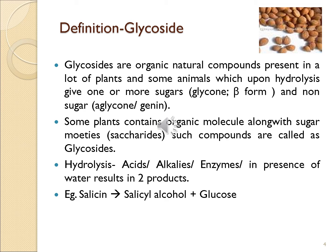Upon hydrolysis of glycosides by any acid, alkali, or enzyme in the presence of water, it results in two products. For example, salicin is a glycoside; upon hydrolysis it gives salicyl alcohol and glucose.